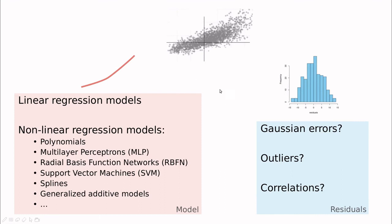We also have to talk about residuals. What does the error look like? Is the error Gaussian? Do you have long tails? Do you have any outliers that are changing the predictions? What are the correlations in the errors? And so on and so forth.